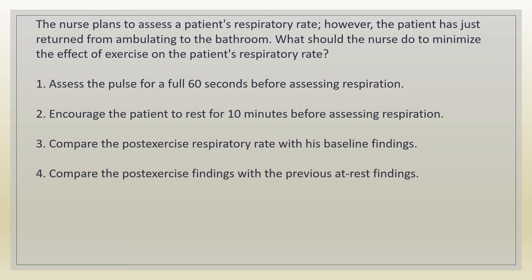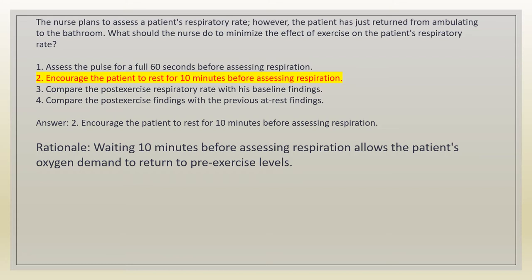The nurse plans to assess a patient's respiratory rate. However, the patient has just returned from ambulating to the bathroom. What should the nurse do to minimize the effect of exercise on the patient's respiratory rate? 1. Assess the pulse for full 60 seconds before assessing respiration. 2. Encourage the patient to rest for 10 minutes before assessing respiration. 3. Compare the post-exercise respiratory rate with his baseline findings. 4. Compare the post-exercise findings with the previous at-rest findings. Answer: 2. Rationale: waiting 10 minutes allows the patient's oxygen demand to return to pre-exercise levels.